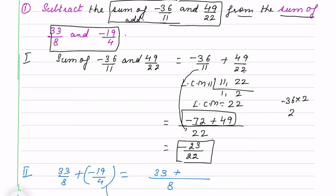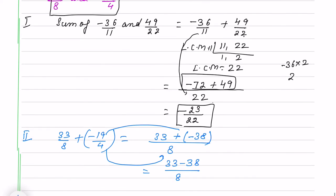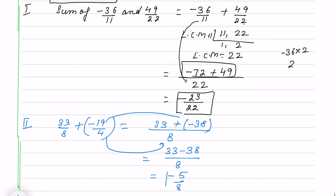And inside, 4 times 2 is 8, so 19 times 2 is 38. I will follow here again. It is 33 minus 38. 38 is bigger, so it will be, we will subtract, sign will be of the greater one. Now we have got both sums.